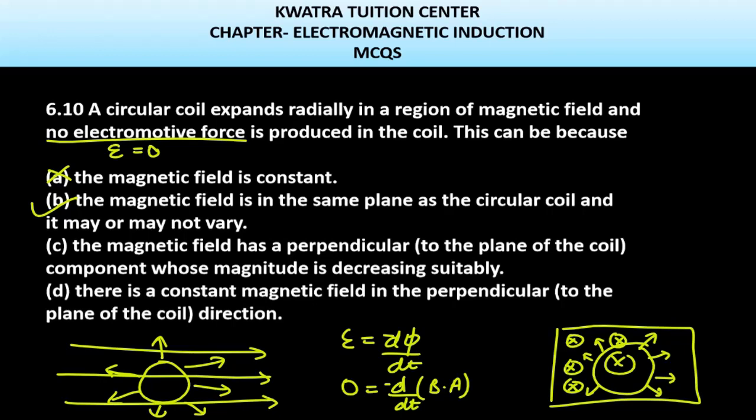Your electromotive force will be 0 because dot product again in this case will remain constant at every instant. In every case, your dot product will be constant, and if that is constant, e will be 0.